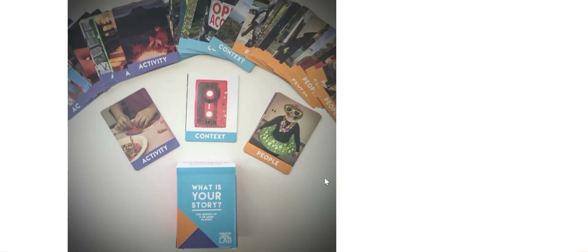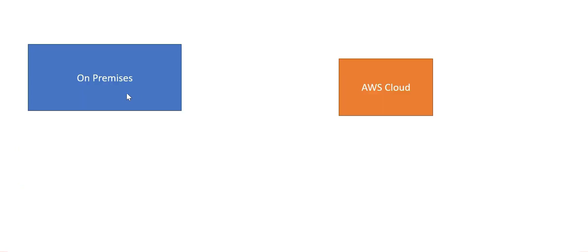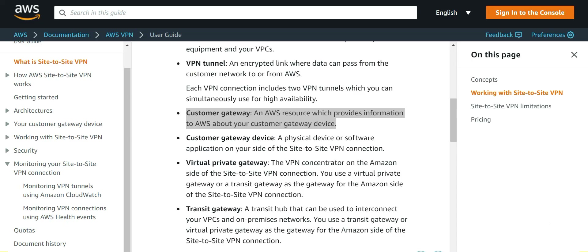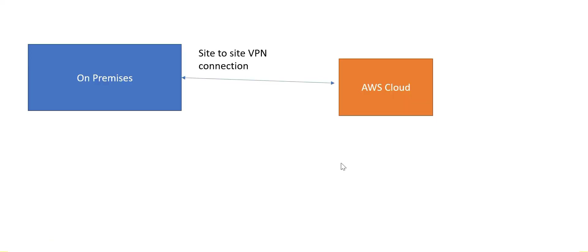The story here: you have on-premises and cloud environments talking to each other using a site-to-site VPN connection. Users are experiencing slow connectivity because of increased traffic, so we need to increase VPN throughput. There are four options. The first says to use customer gateways — this is not useful because it only provides information to AWS about the device used on-premises. It does not help to scale up.